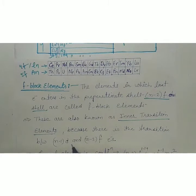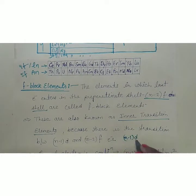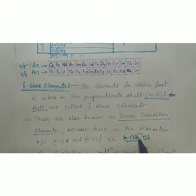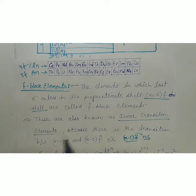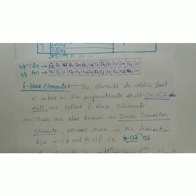In transition elements, electrons transit between (n-1)D and nS — those are D block elements known as transition elements. These are inner transition elements because the electron transits between the pre-penultimate shell and the penultimate shell.